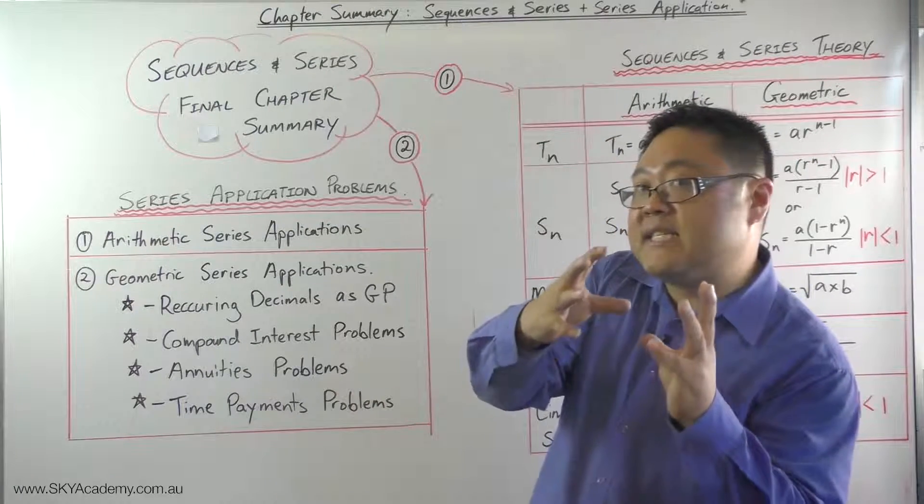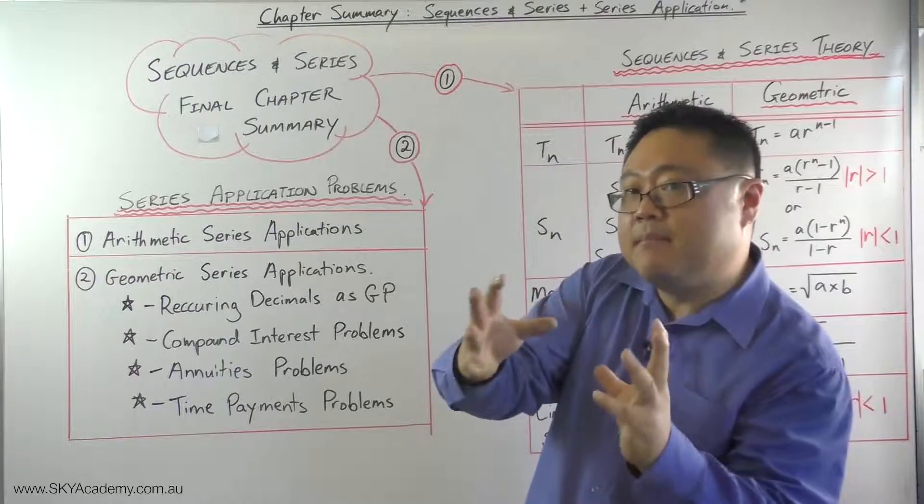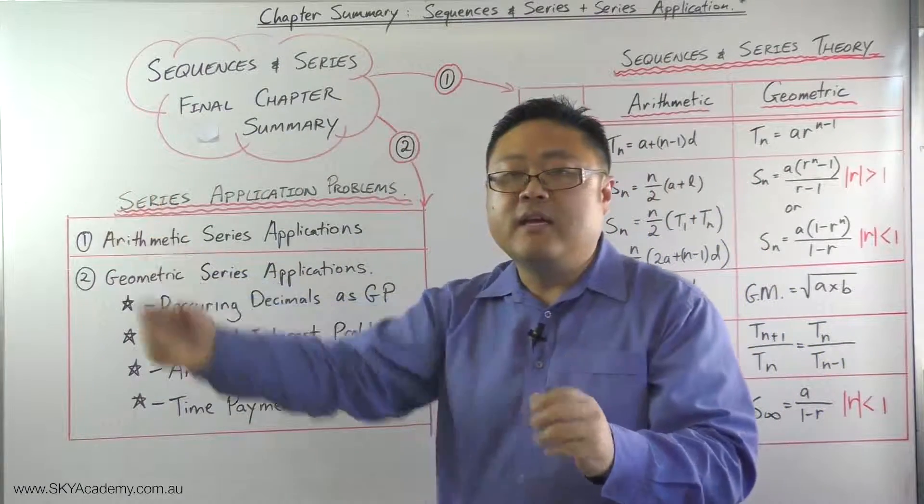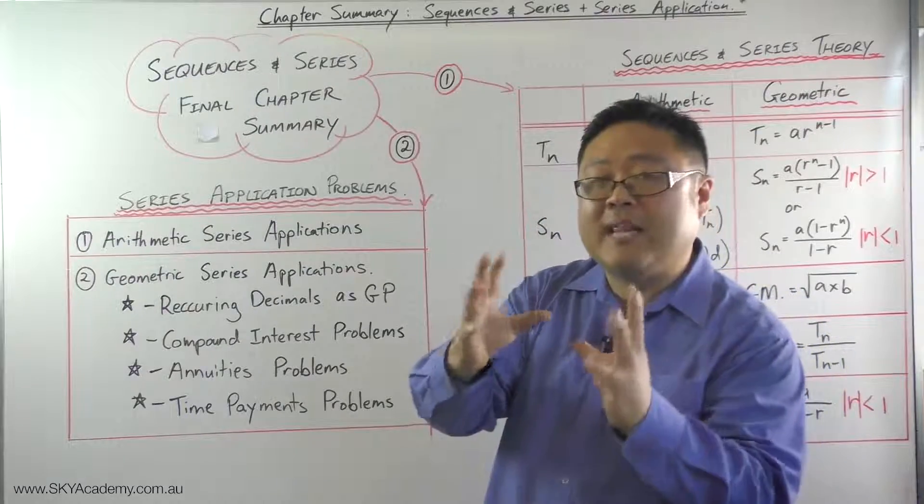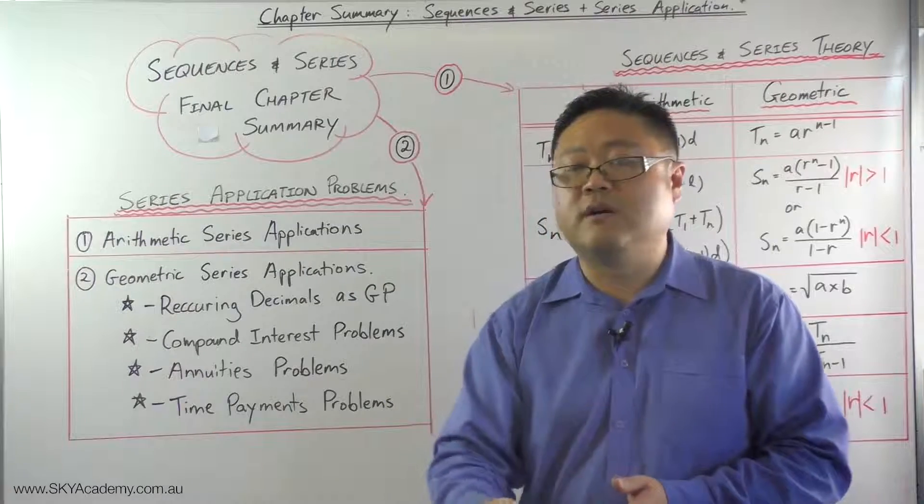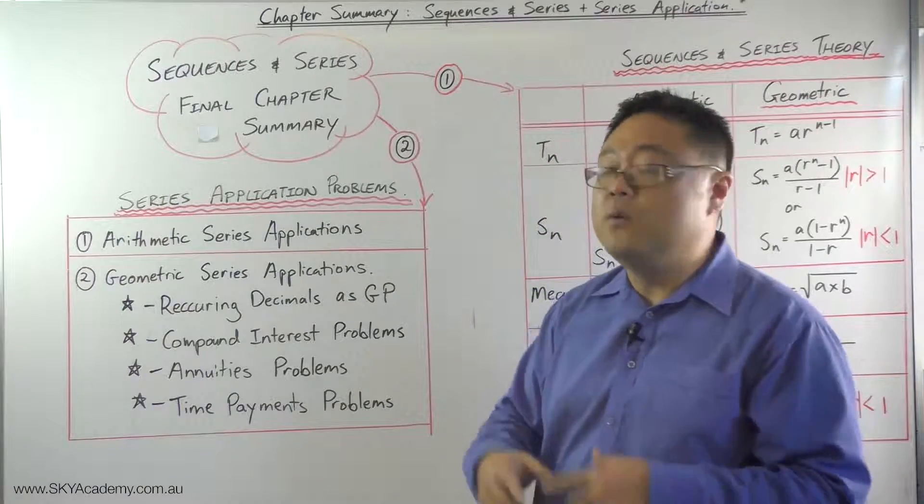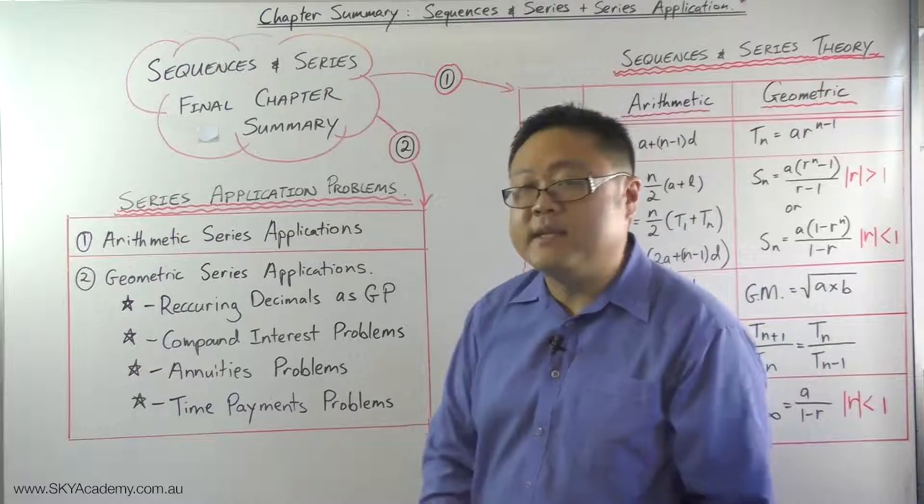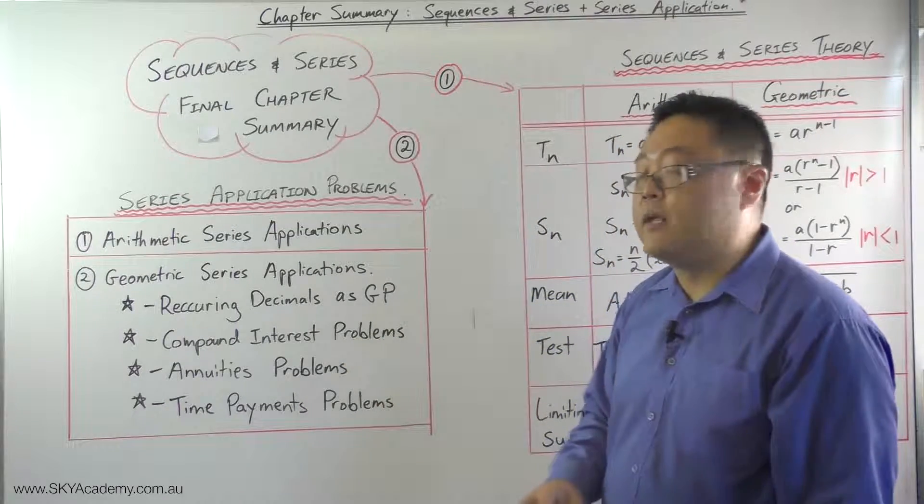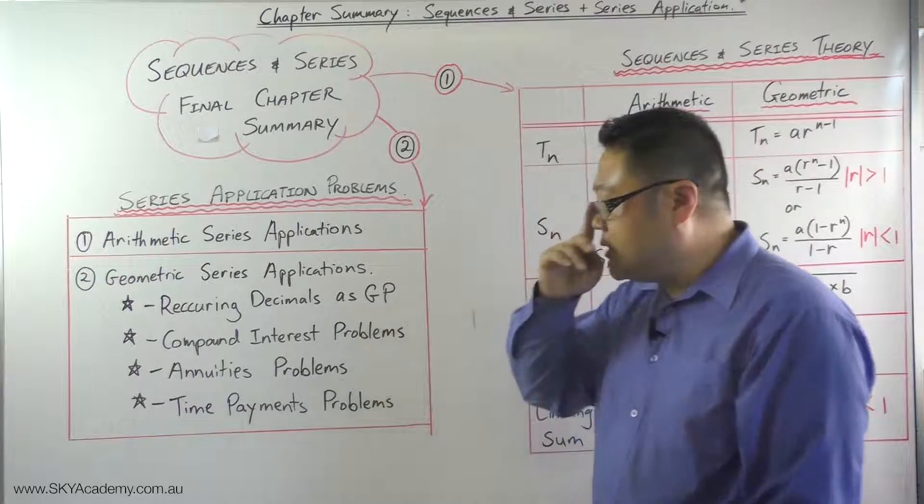What lump sum do you need to start with to get that future value at the end if you're going to start off with a lump sum instead of making regular contributions, which is called your present value amount of your annuity, which basically comes down to equating the compound interest formula with the annuities formula. The other thing that you need to work out is time payment problems.